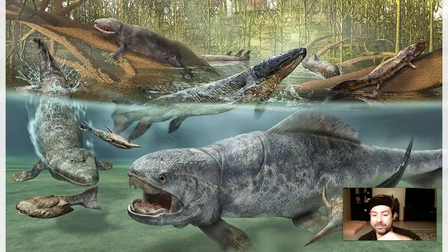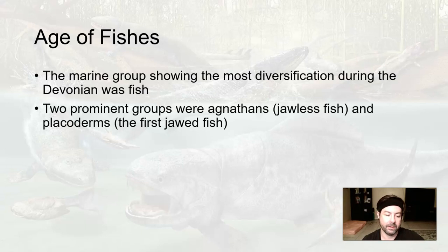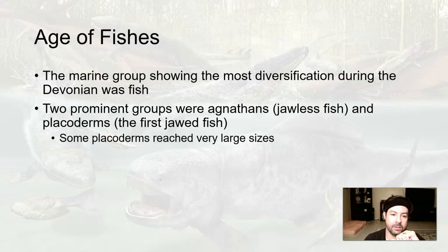Known as the Age of Fishes, the biggest diversification in the oceans was in fish. We see a lot of different fishes evolve in the fossil record. The two prominent groups were Agnathans, which were jawless fishes, and Placoderms, the first jawed fish. Some Placoderms reached very, very large sizes.